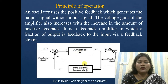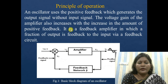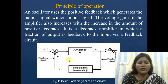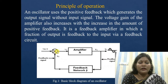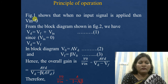In case of an oscillator, the amplifier circuitry provides a 180-degree phase shift and the feedback circuit also provides a 180-degree phase shift. So the total phase shift required around the loop will be 360 degrees, or equivalently 0 degrees. It is a feedback amplifier in which a fraction of the output is fed back to the input via a feedback circuit, with no external input voltage required.